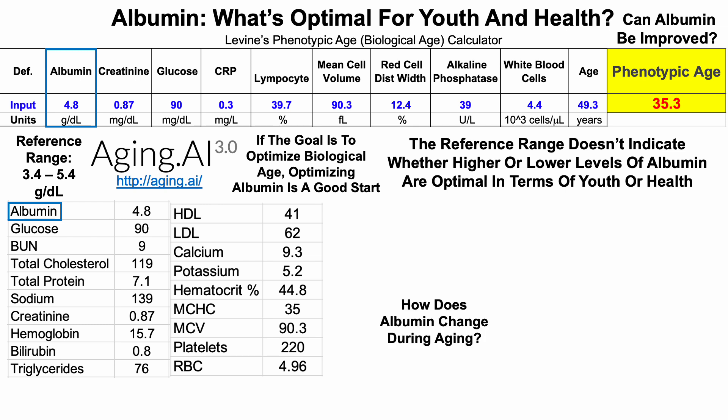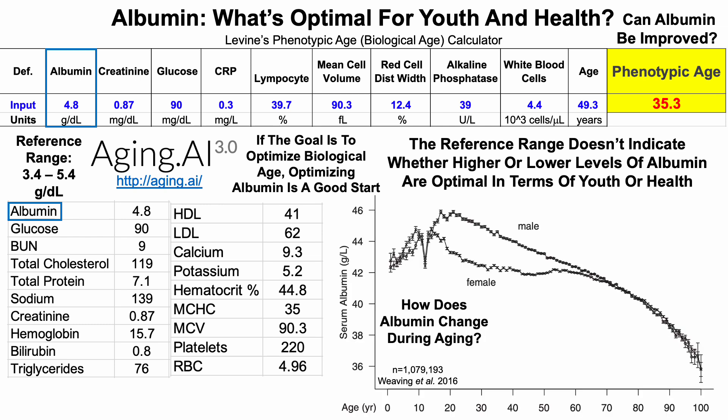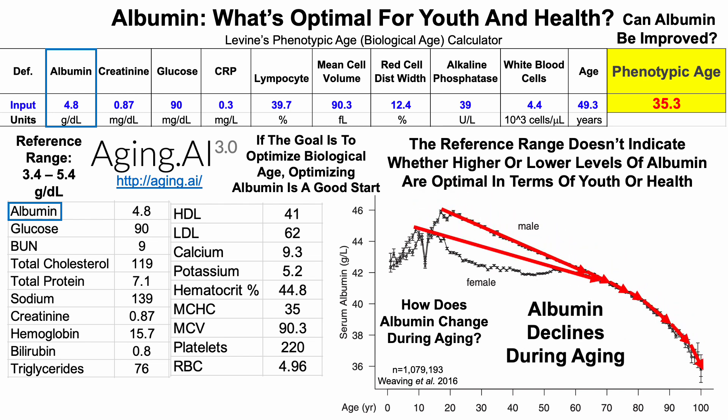How does albumin change during aging? This is a study of about 1.1 million people, and we're looking at serum levels of albumin on the Y-axis plotted against age all the way up to 100 years old. We can see that albumin levels decline during aging for both men and women.